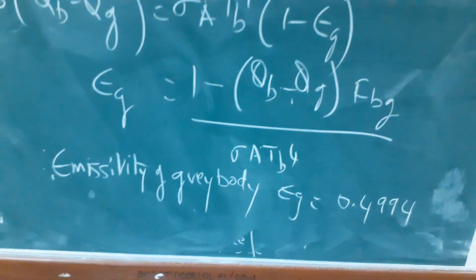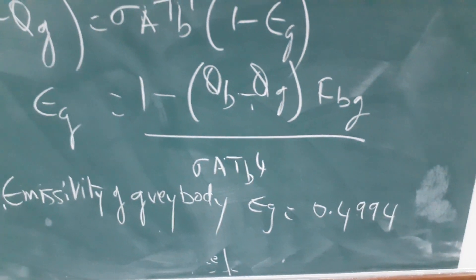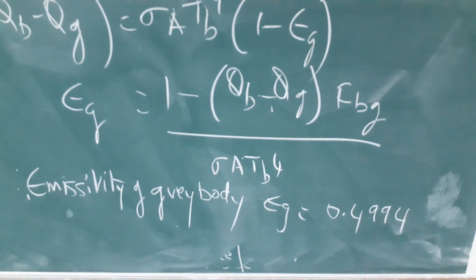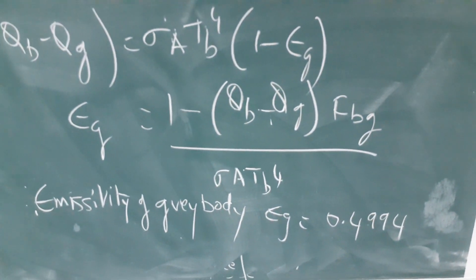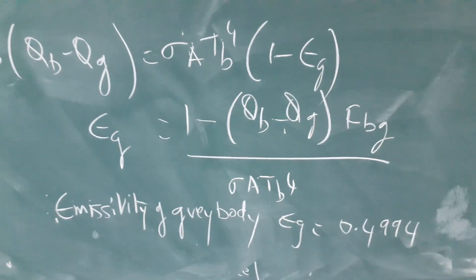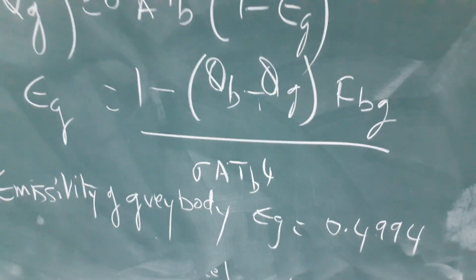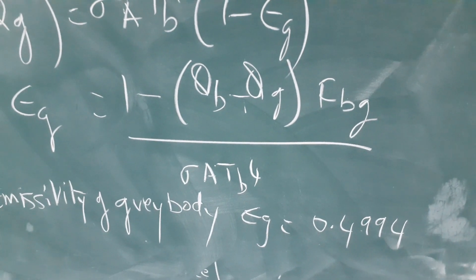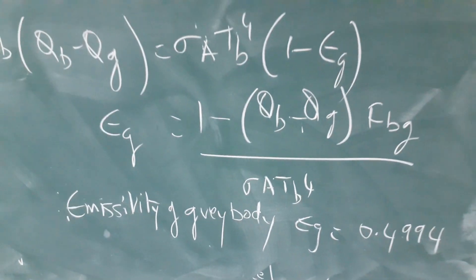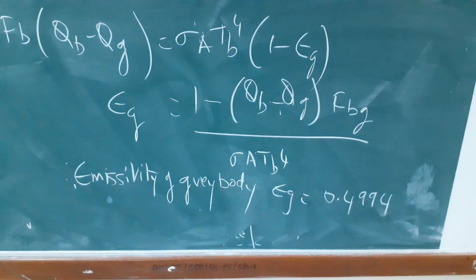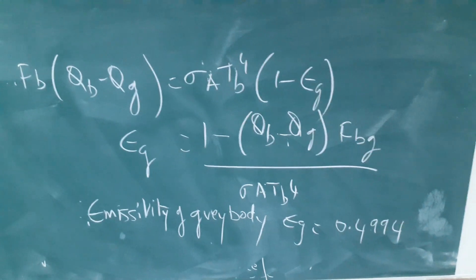Therefore, you can find emissivity of gray body is equal to 0.4994. So what is the emissivity of black body? 1. So gray body will always be less than emissivity of black body. In this case, we are getting emissivity of gray body equal to 0.4994. So this will conclude the experiment on emissivity. So we have taken a body and found its emissivity. Okay, thank you.